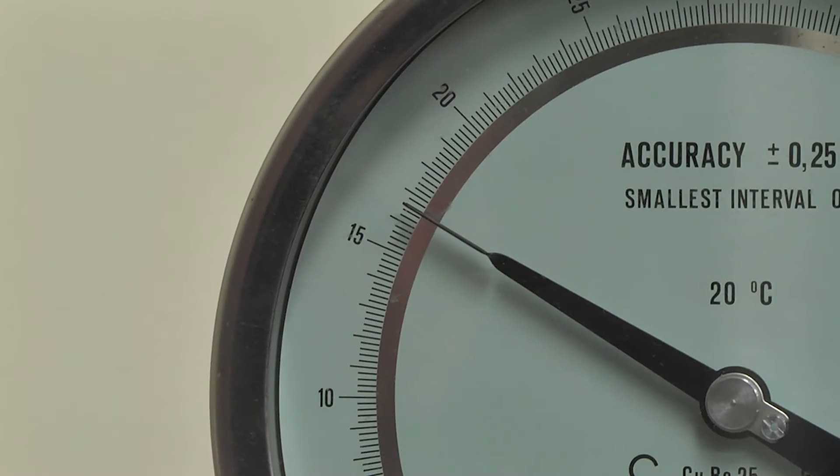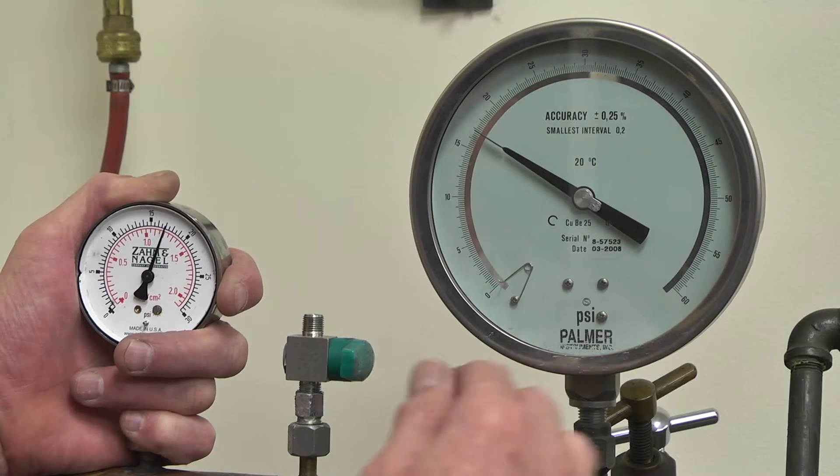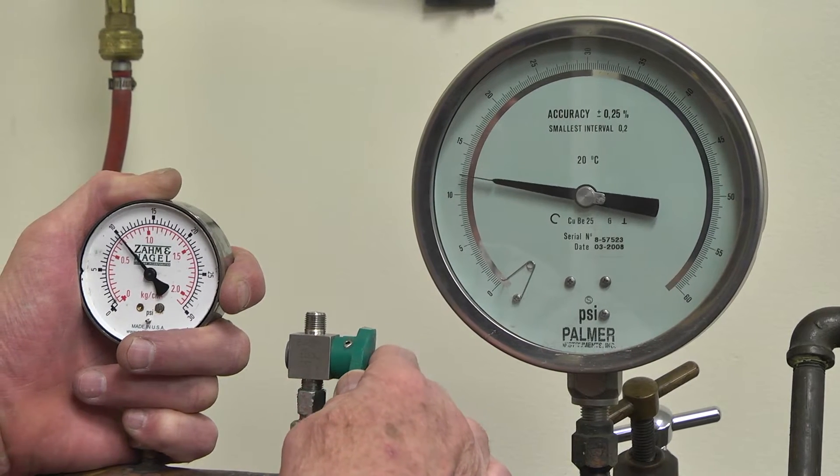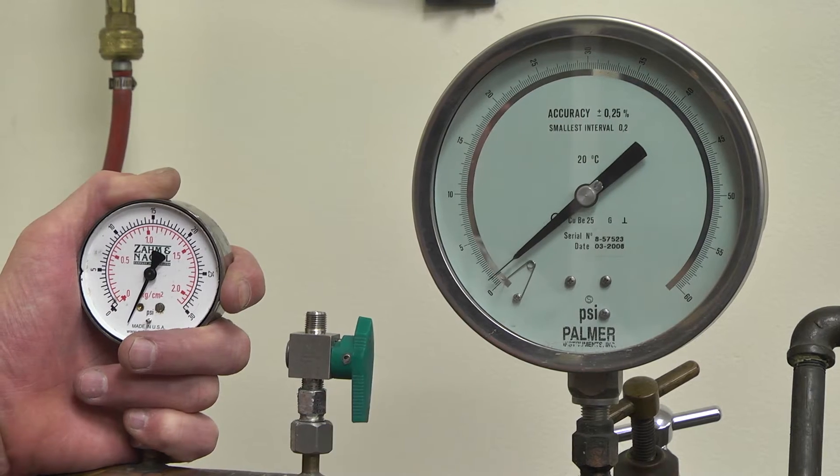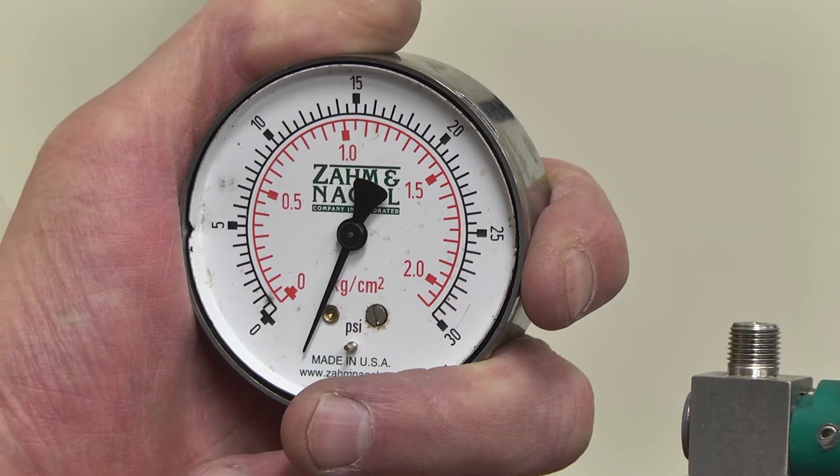Turn the screw until it matches the reading on the test gauge. Release the pressure on the gauge tester. The pointer may rest anywhere within the black zero range of the gauge. If it falls outside, the gauge needs to be replaced.